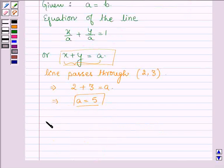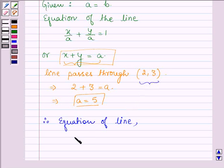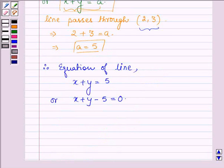And therefore equation of the line which cuts off equal intercept and passes through the point 2,3 is given by x plus y is equal to 5, or x plus y minus 5 is equal to 0. And that's our answer: the equation of line is x plus y is equal to 5.